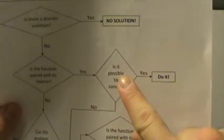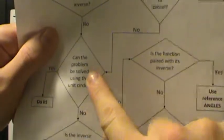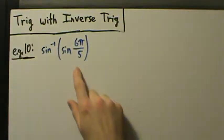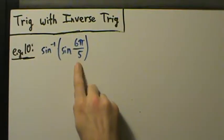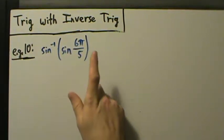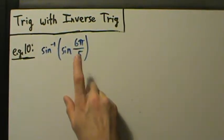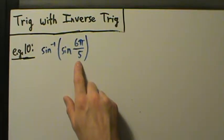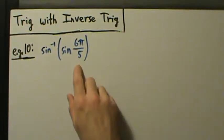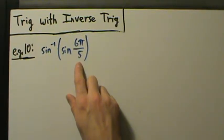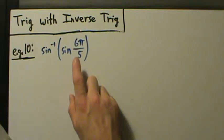So continuing with the flowchart. Can the problem be solved using the unit circle? In other words, is 6π over 5 a nice number that shows up on the unit circle? No, it's not. At first glance it might look like it is, because it's some number times π divided by some other number. But angles over 5 are not special angles on the unit circle — we don't know much about them the way we know about π over 6, π over 4, π over 3, etc. So no, this is not a special angle on the unit circle, which means we cannot solve the problem with the unit circle.